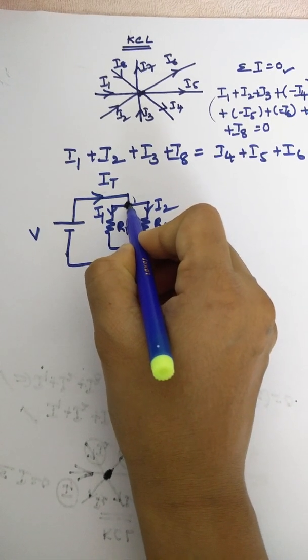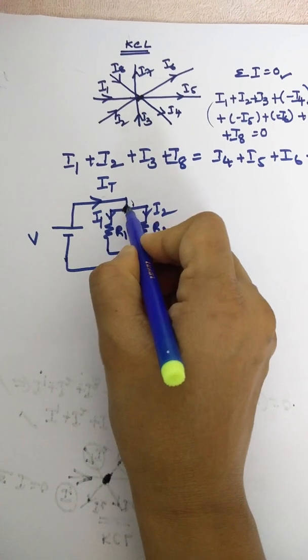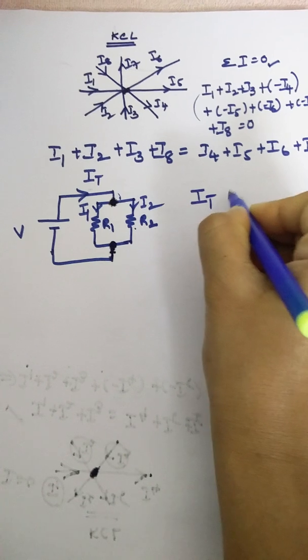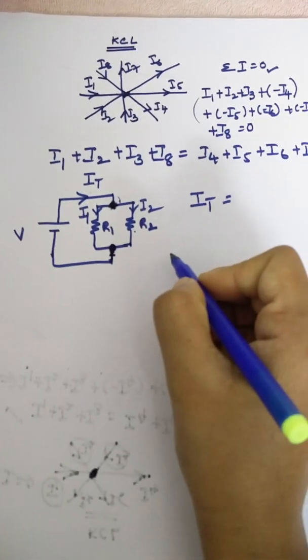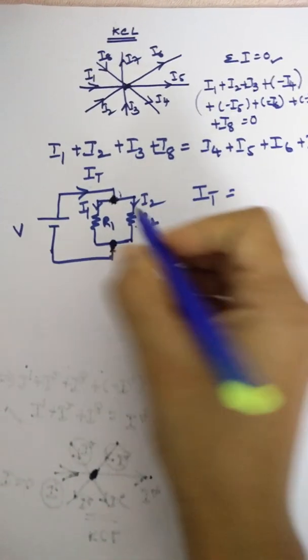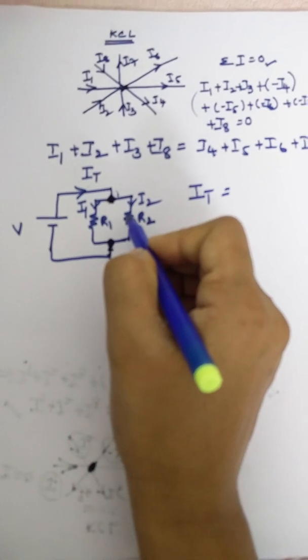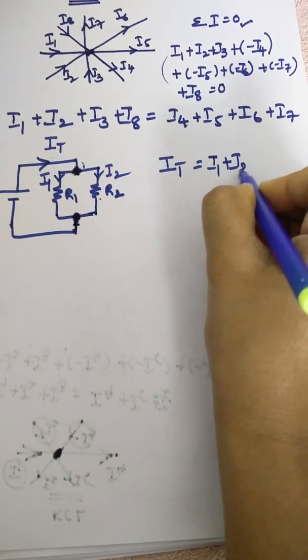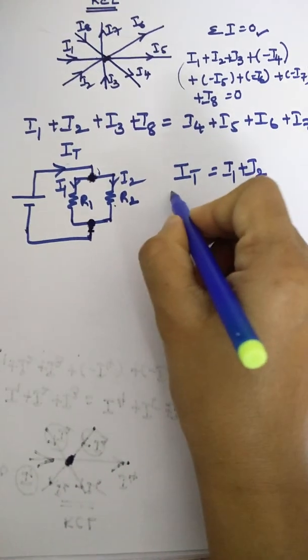So at this node, what is the entering current? It. Is there any other entering current? No. So It is the only current which is entering to the node, which is equal to these two currents are leaving, so I1 plus I2. So this is KCL.